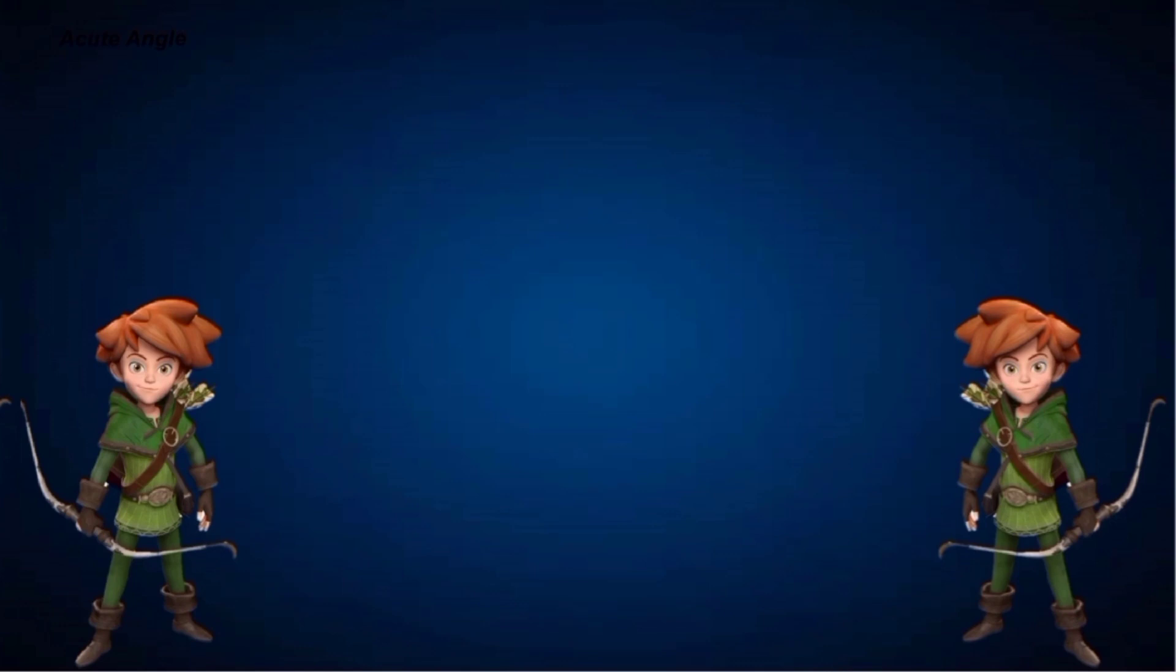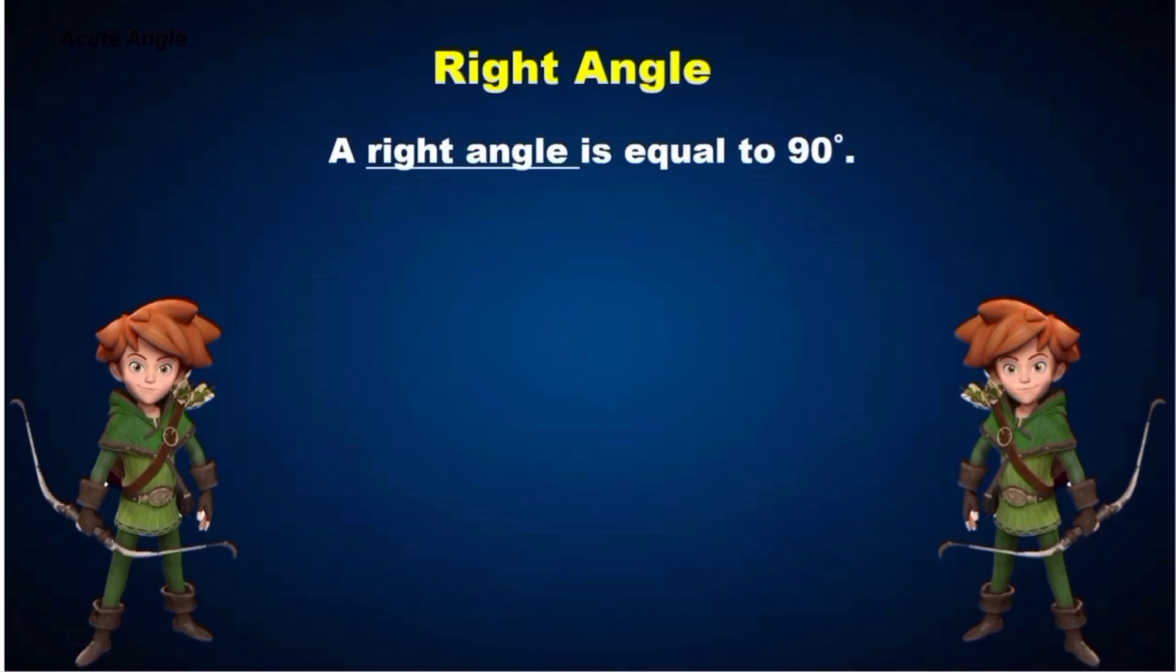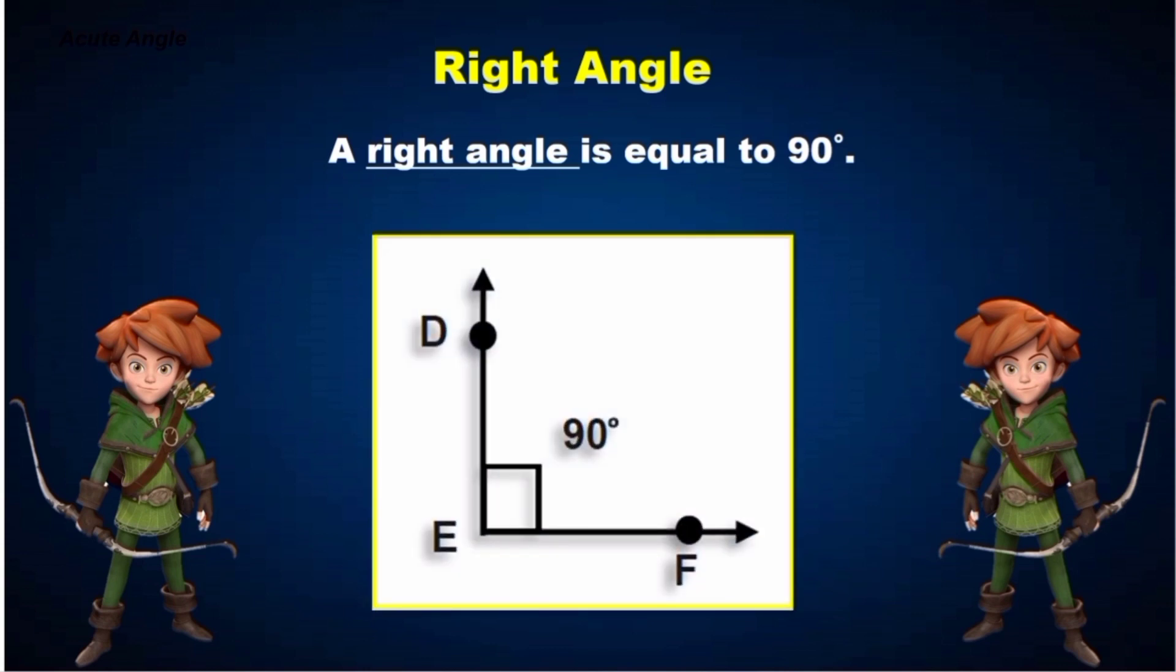Now let's identify right angle. A right angle is equal to 90 degrees. Look at our example. Angle DEF is 90 degrees. Therefore, angle DEF is a right angle.